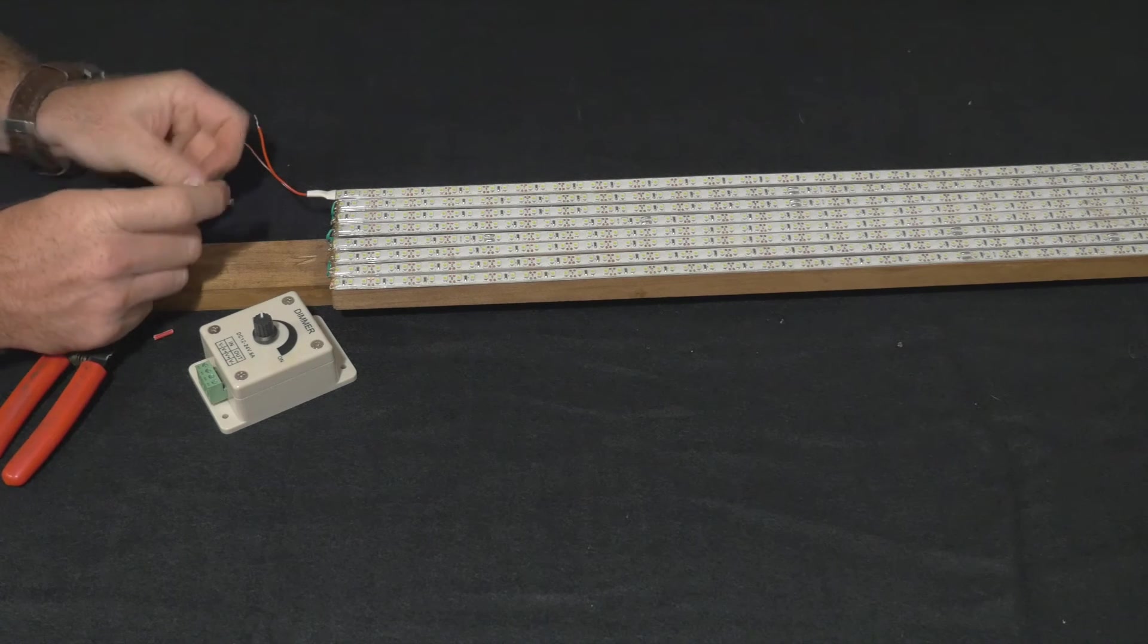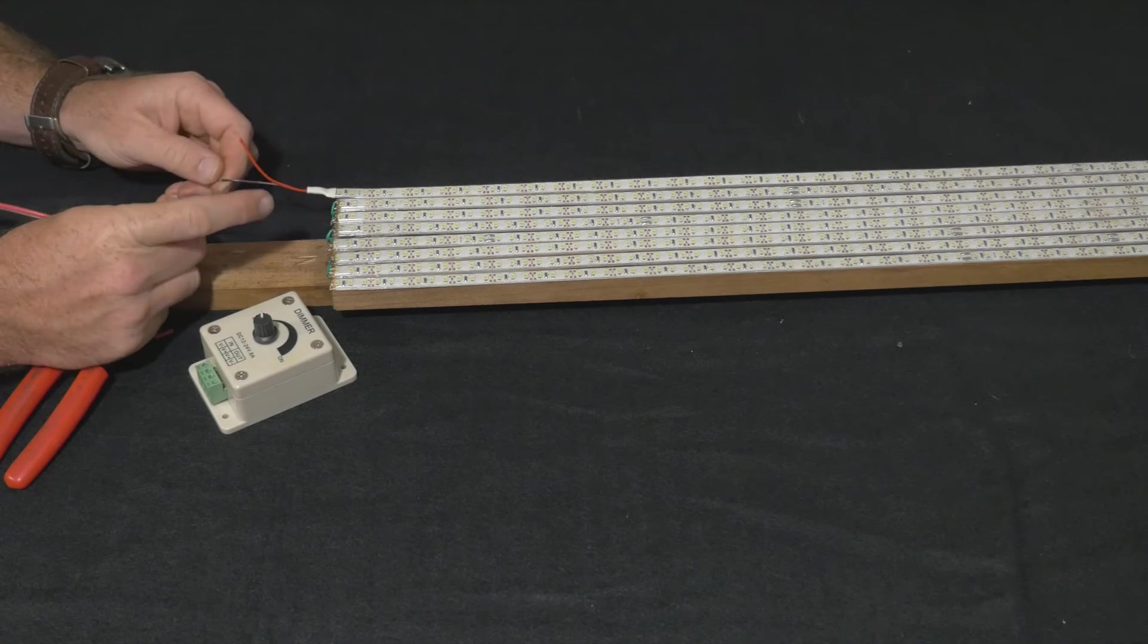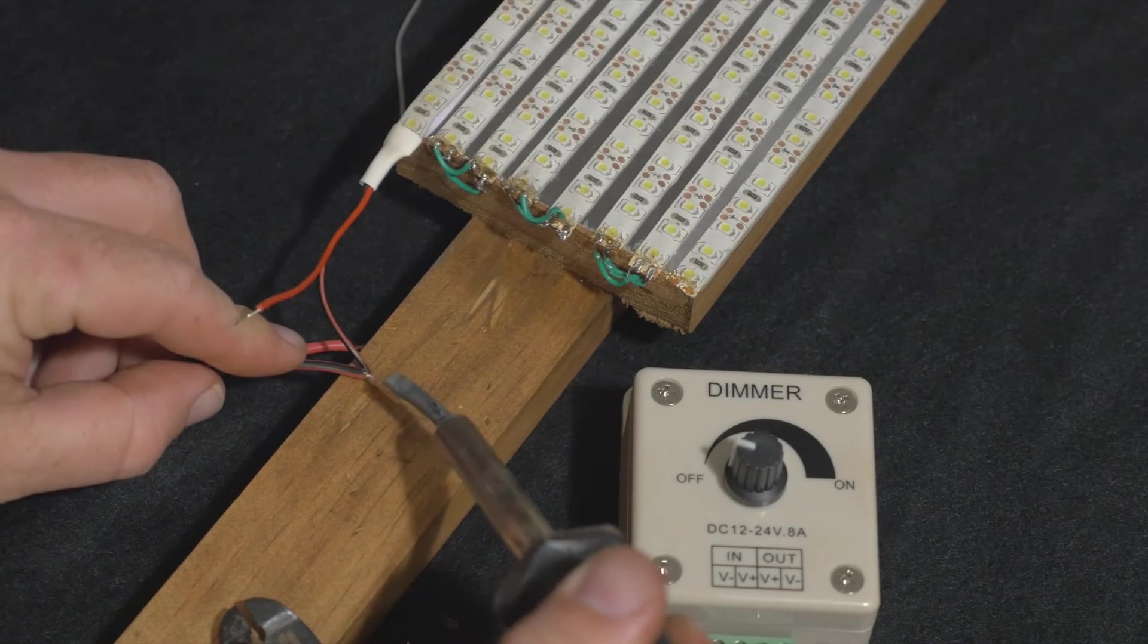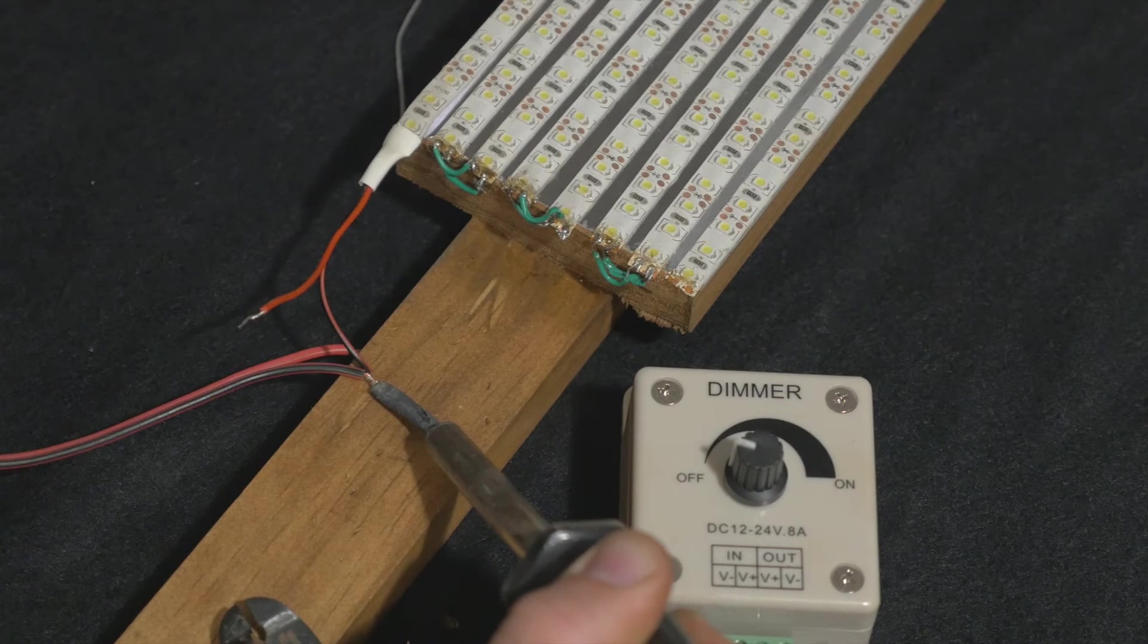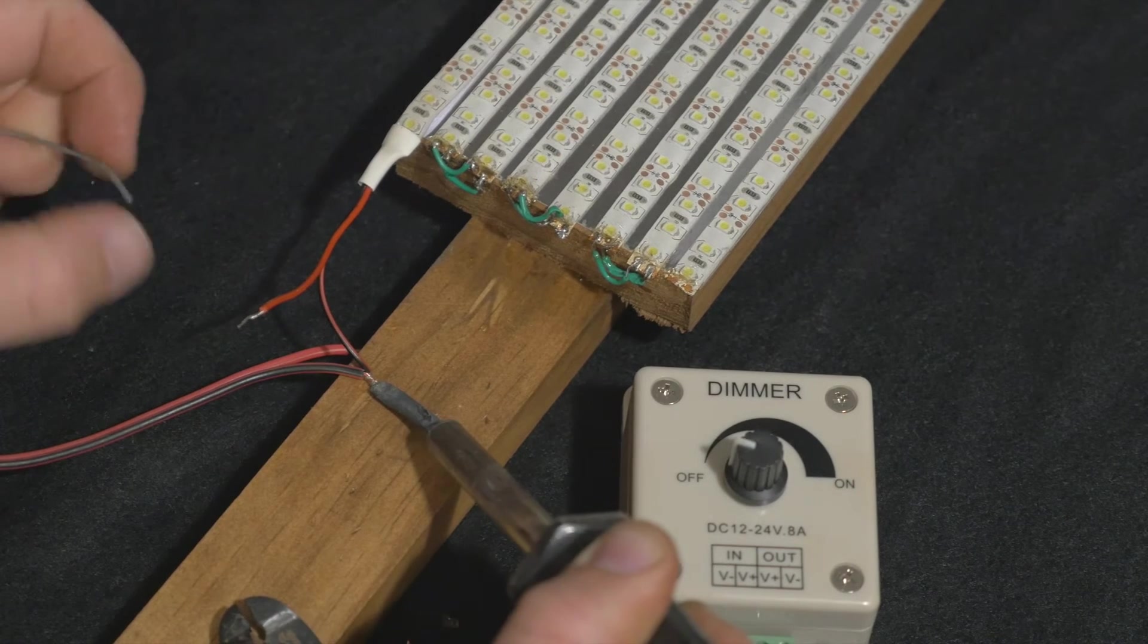Here I'm going to solder the red power wire to the red wire, and then I'll solder the ground or negative wire to the negative wire on the LED. It doesn't really matter what color wire you use as long as you know what the positive and negative wires are when you connect them through to the dimmer.